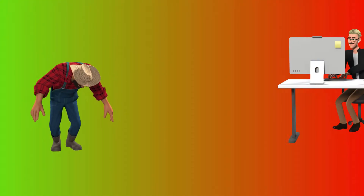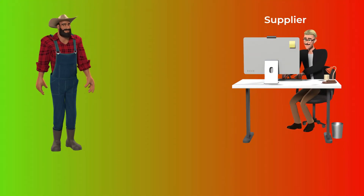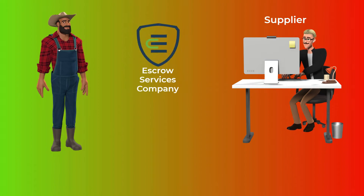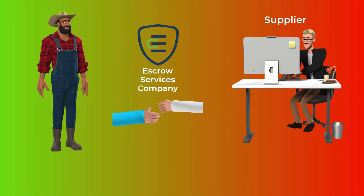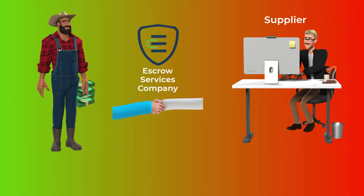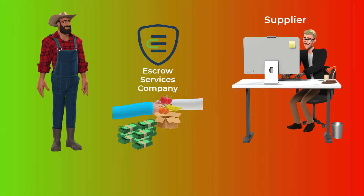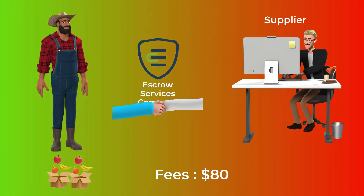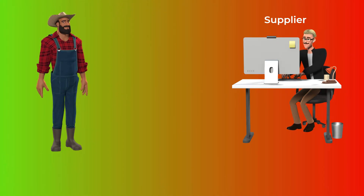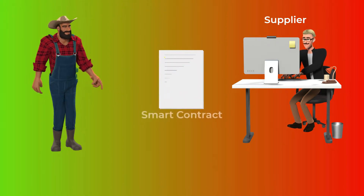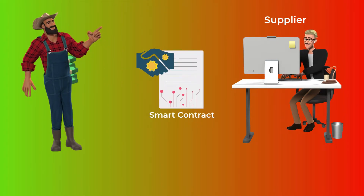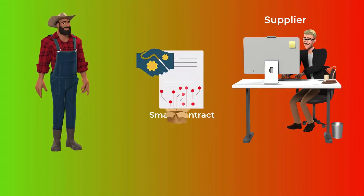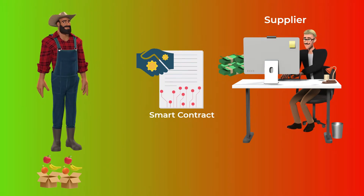To solve this problem in the future, you can hire an escrow services company, where you pay them your money and the supplier will get it only after he sends you the fruits at the agreed-upon time. Or, you can use a smart contract between you and the supplier, eliminating the need for the escrow and its fees.